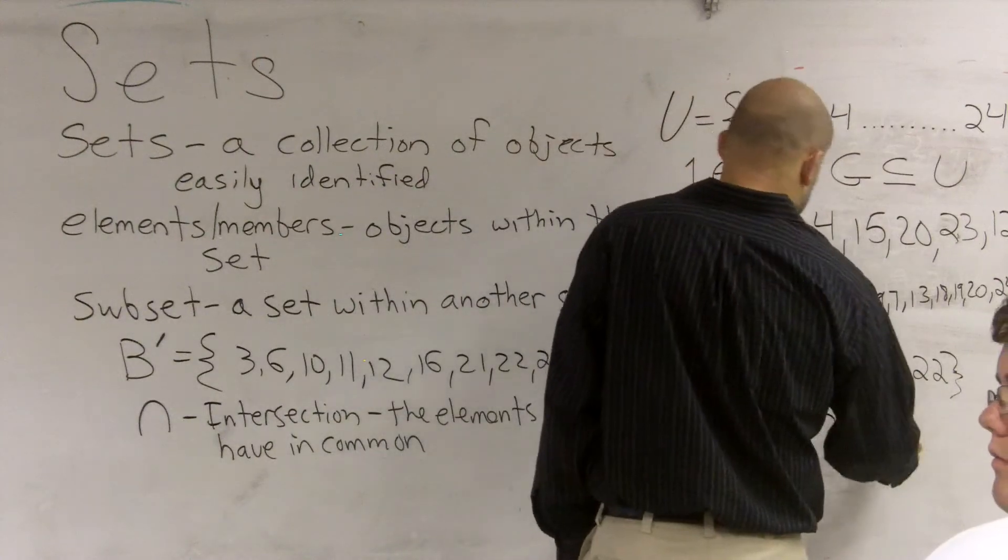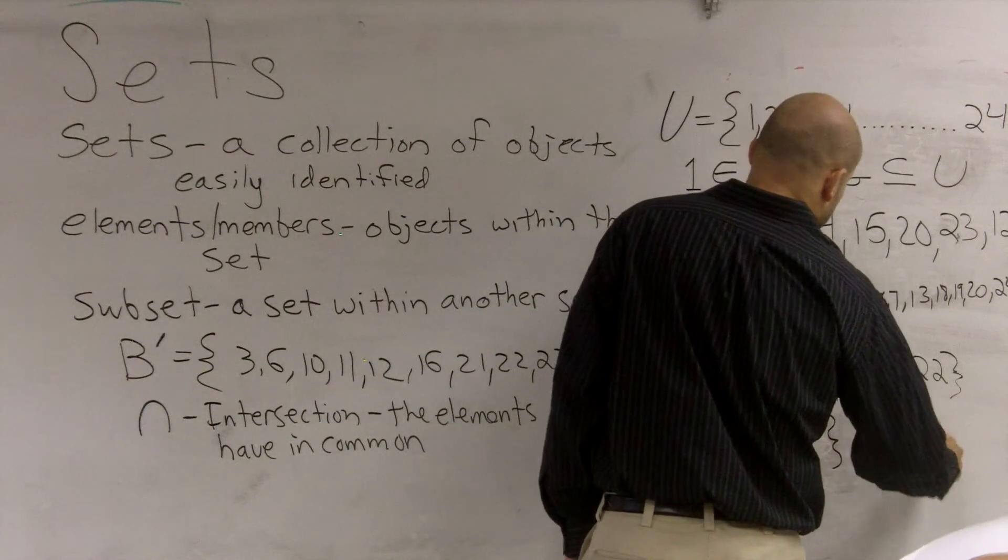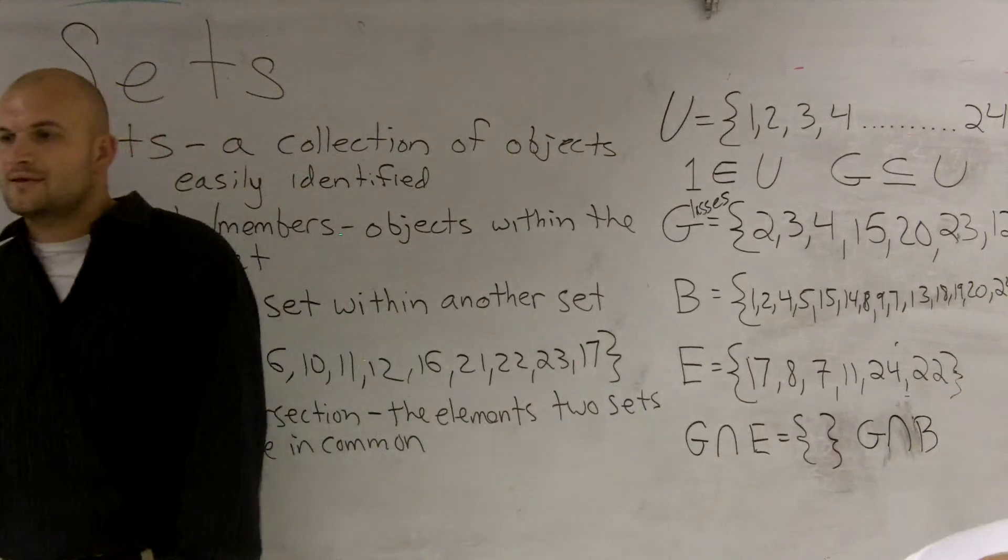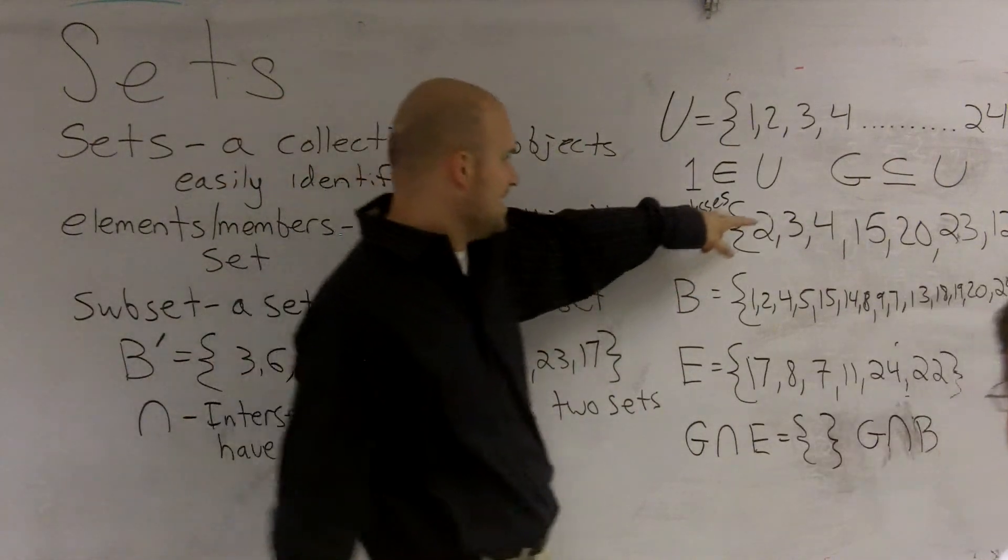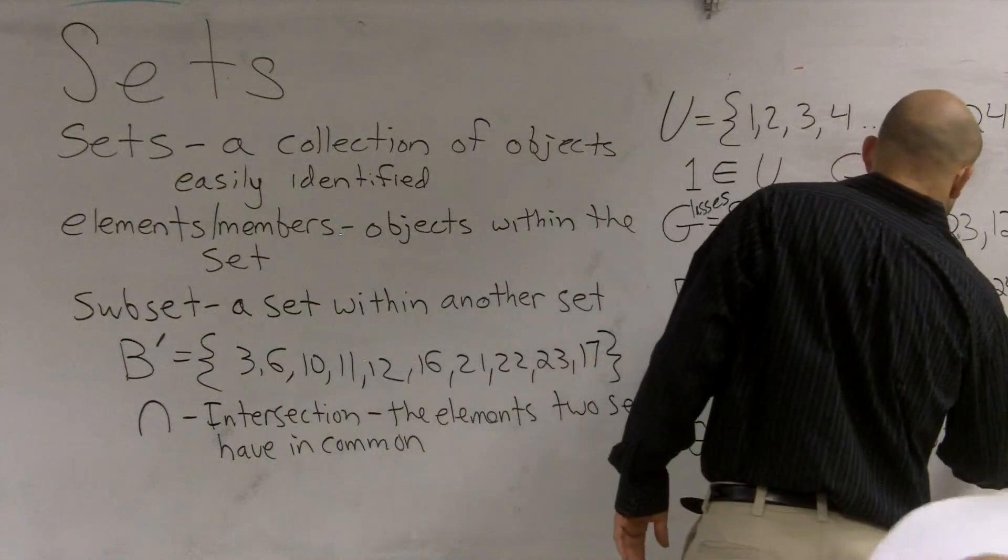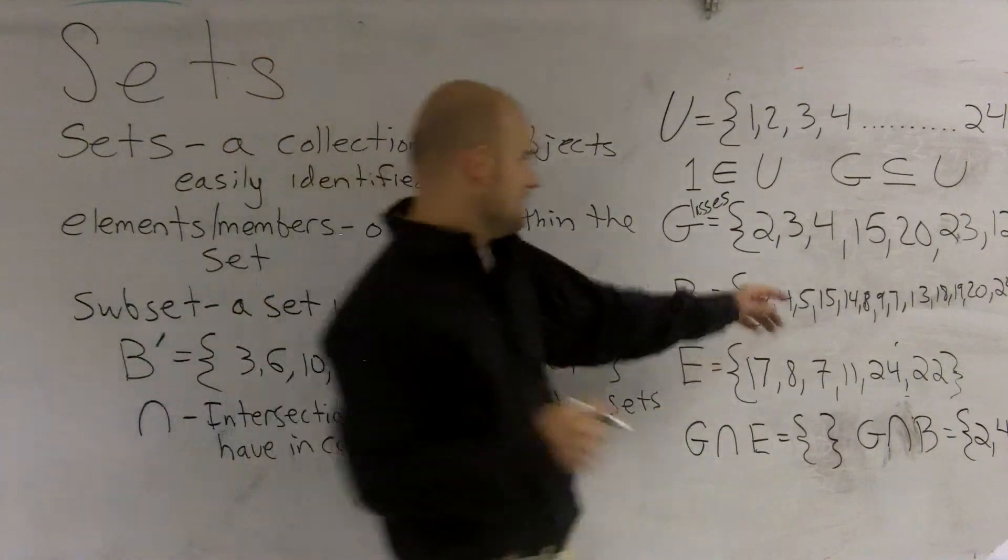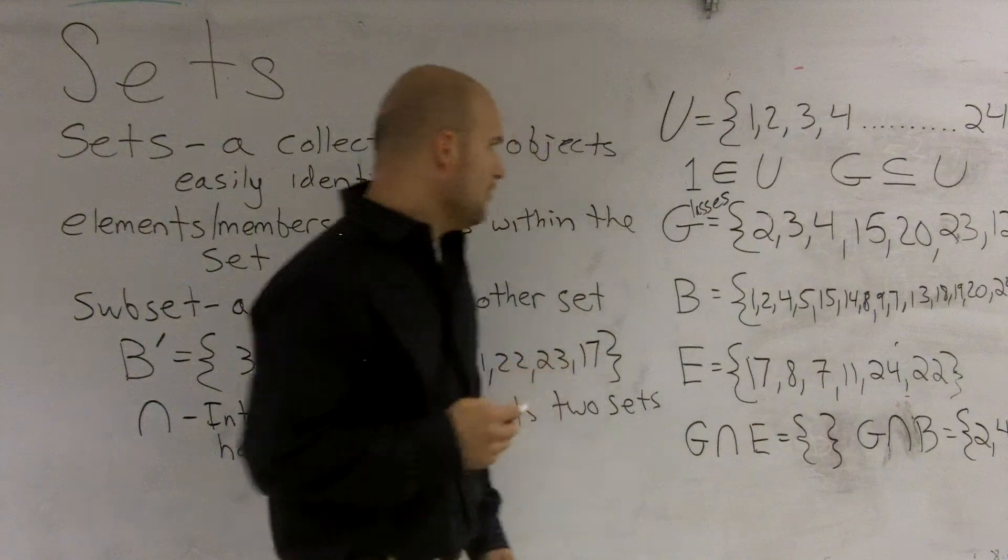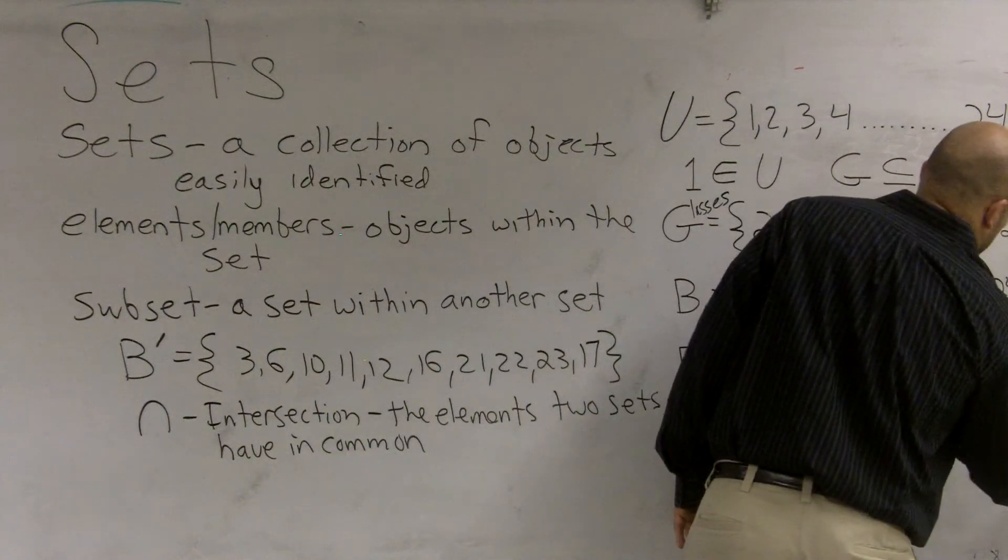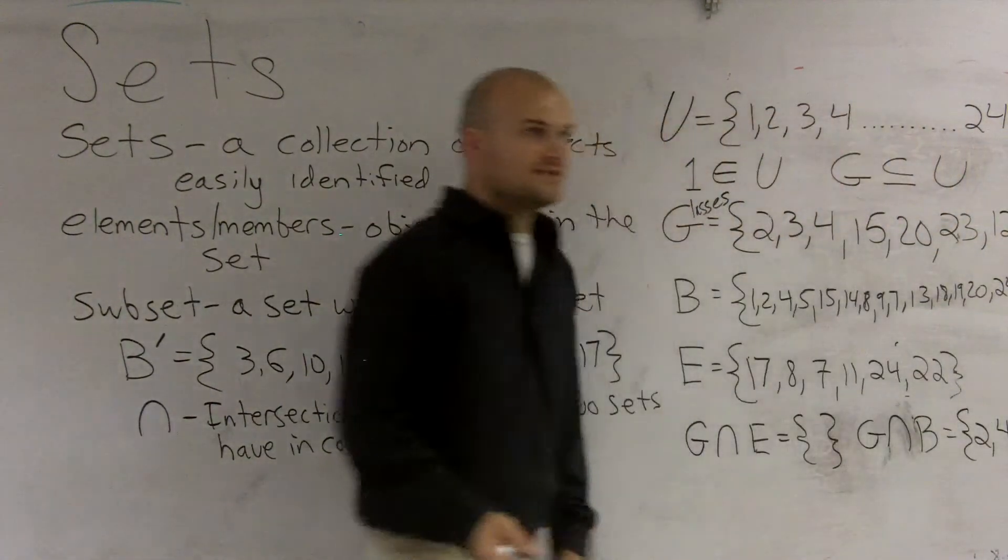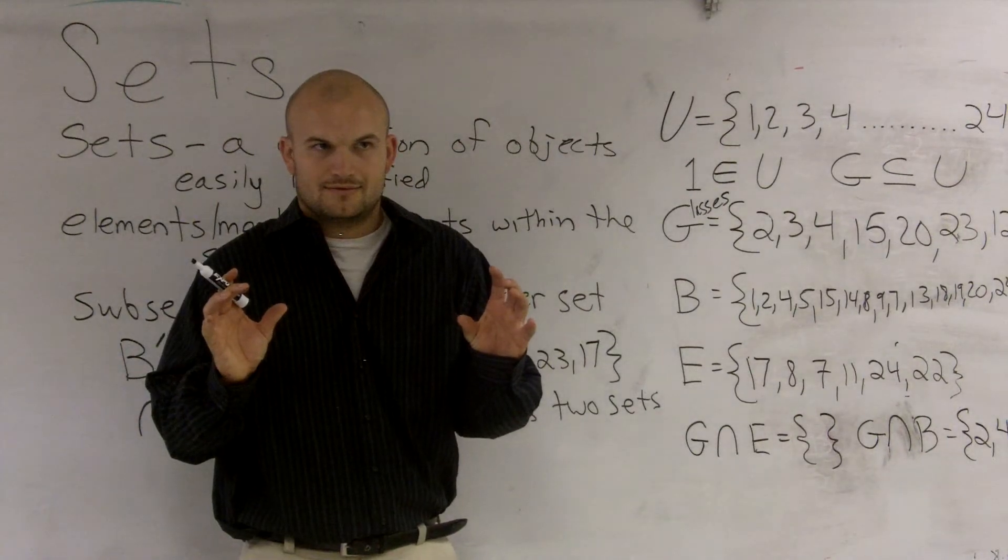So, let's go ahead and do another one. How about let's do G and B. G intersect B. When you go look at these, let's go ahead and see. What do they have in common? They have two, four. You got two. You got four. You got 15. Two, four, 15. We got and 20. Does that make sense to people? Your intersection is what the two elements have in common.